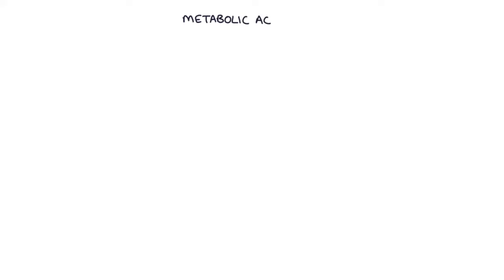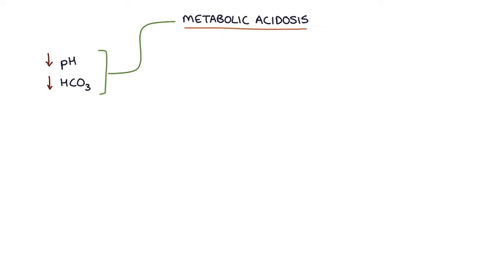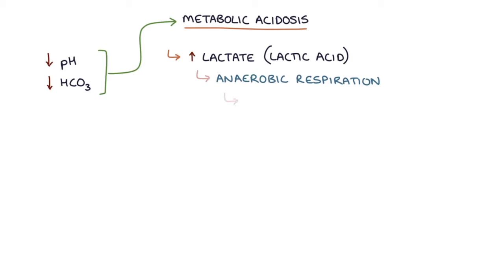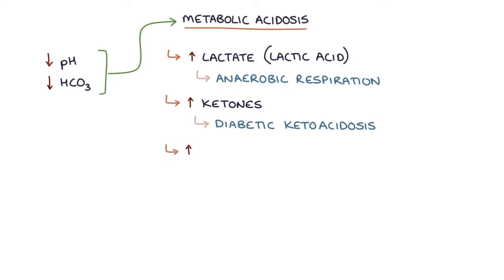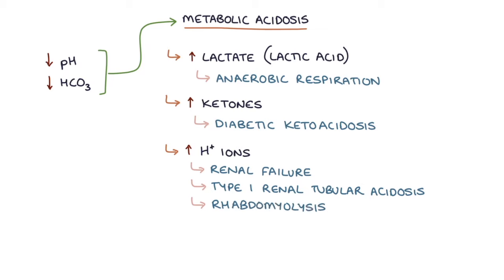Next, let's talk about metabolic acidosis. In a metabolic acidosis, there is a low pH and a low bicarbonate. Causes include raised lactate or lactic acid — released during anaerobic respiration, indicating tissue hypoxia — raised ketones (typically in diabetic ketoacidosis), increased hydrogen ions (due to renal failure, type 1 renal tubular acidosis, or rhabdomyolysis), and reduced bicarbonate (due to diarrhoea, as stools contain bicarbonate, renal failure, or type 2 renal tubular acidosis).